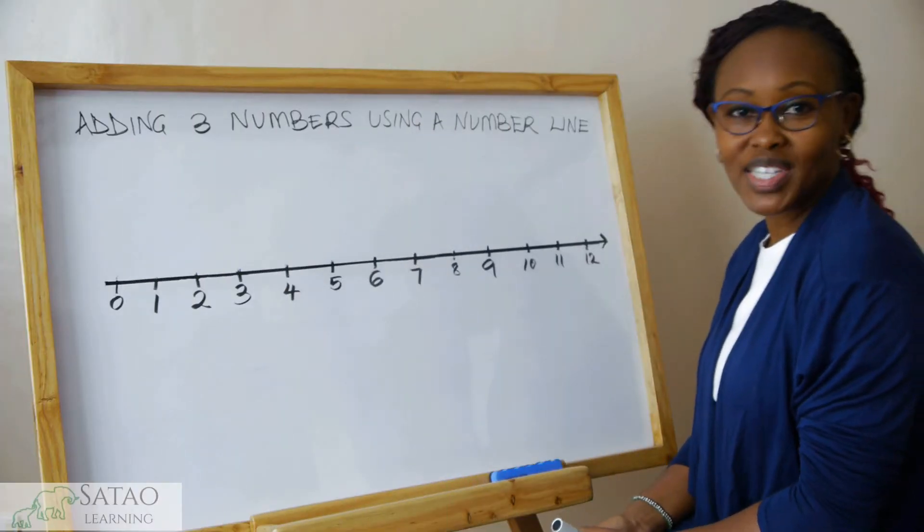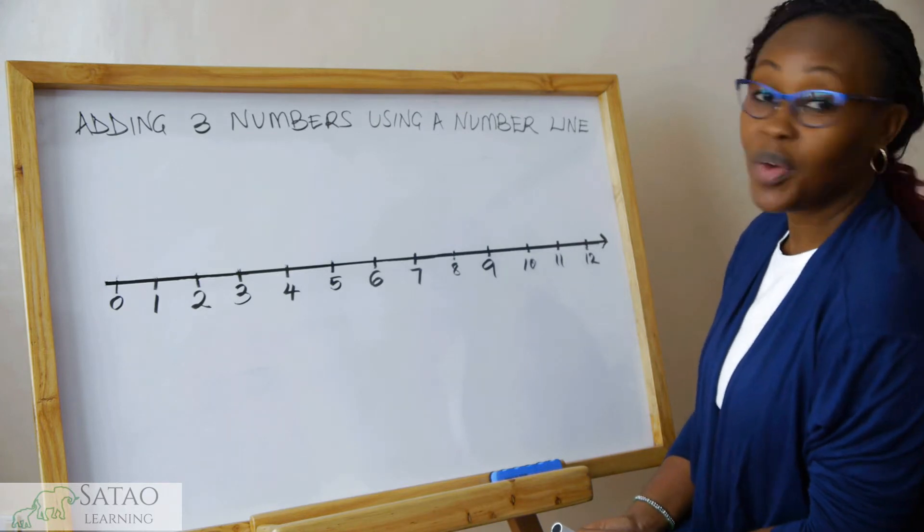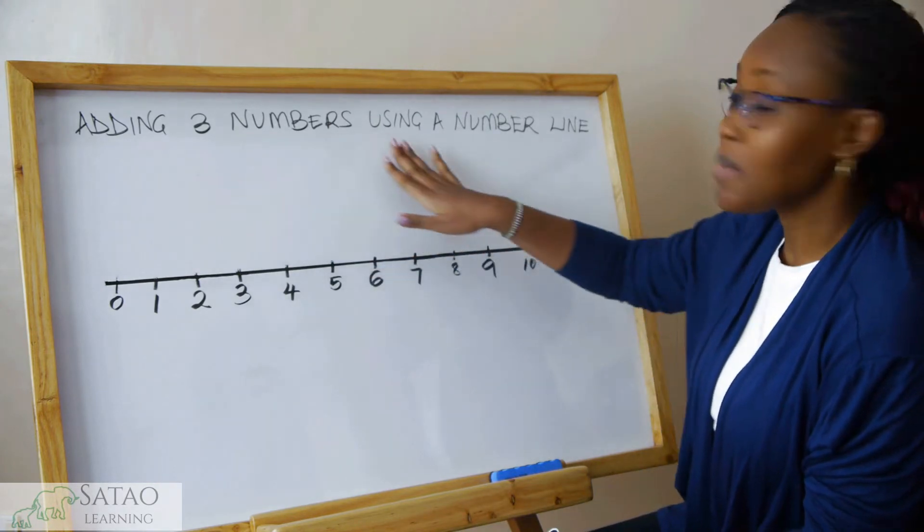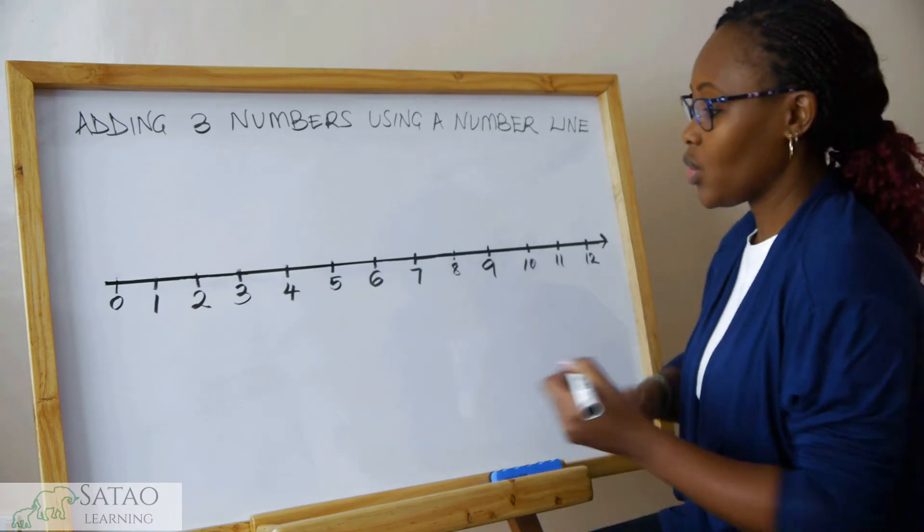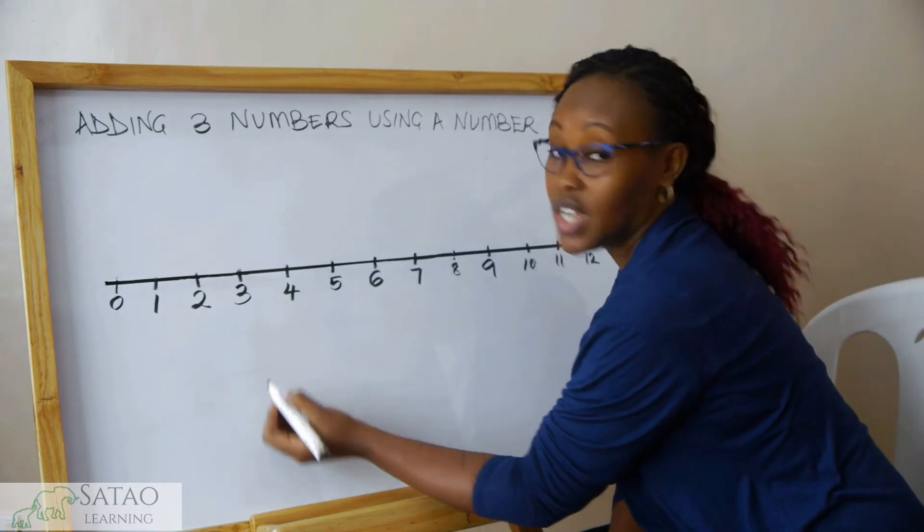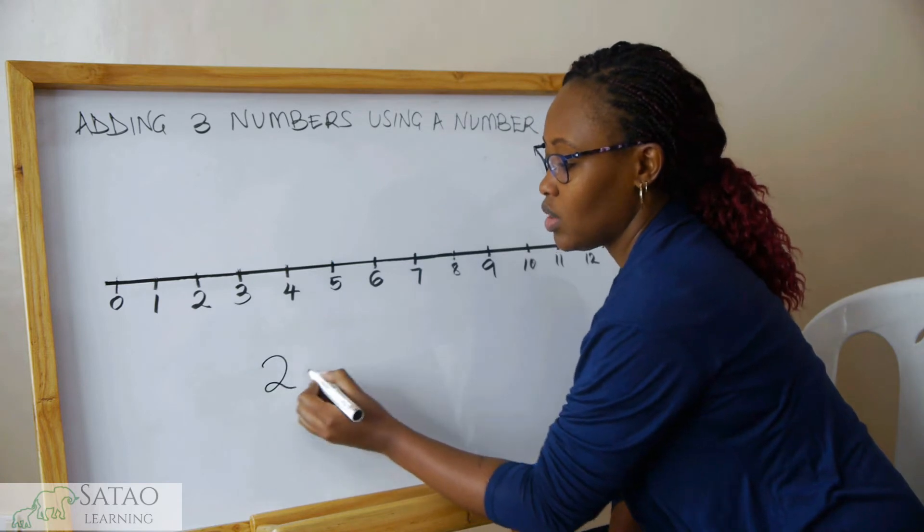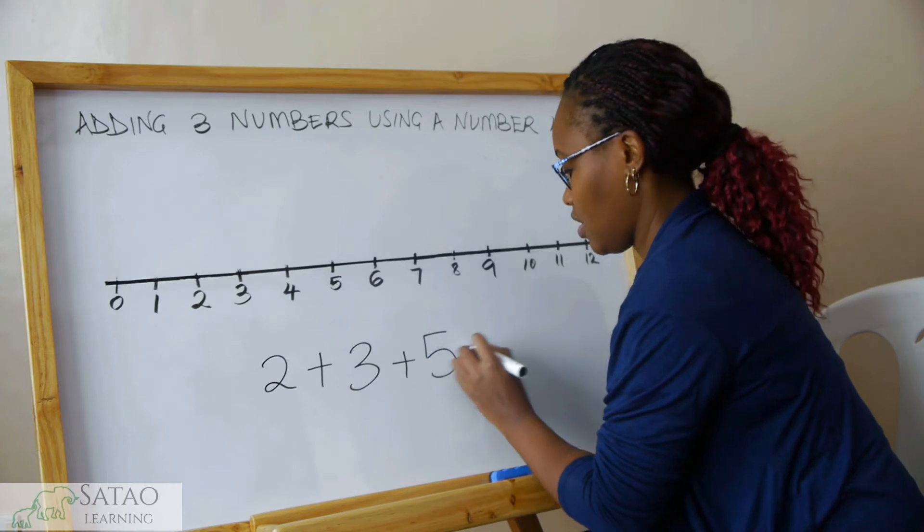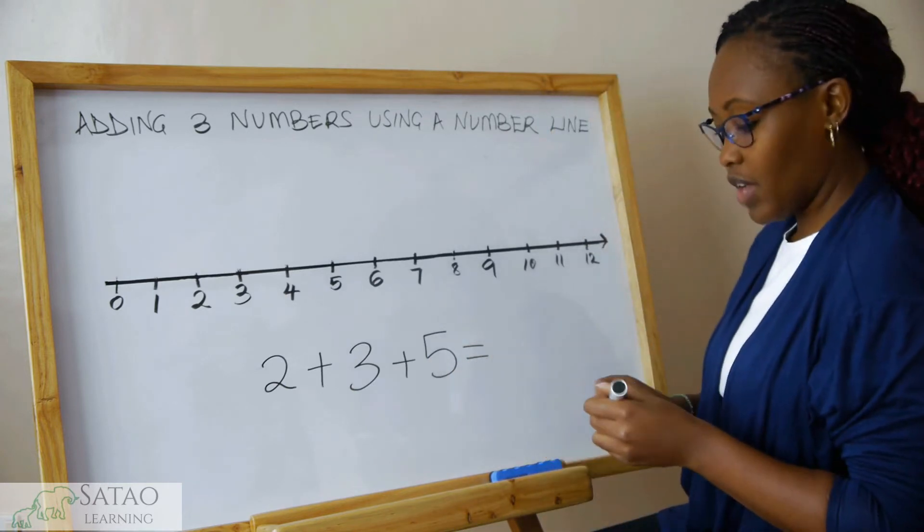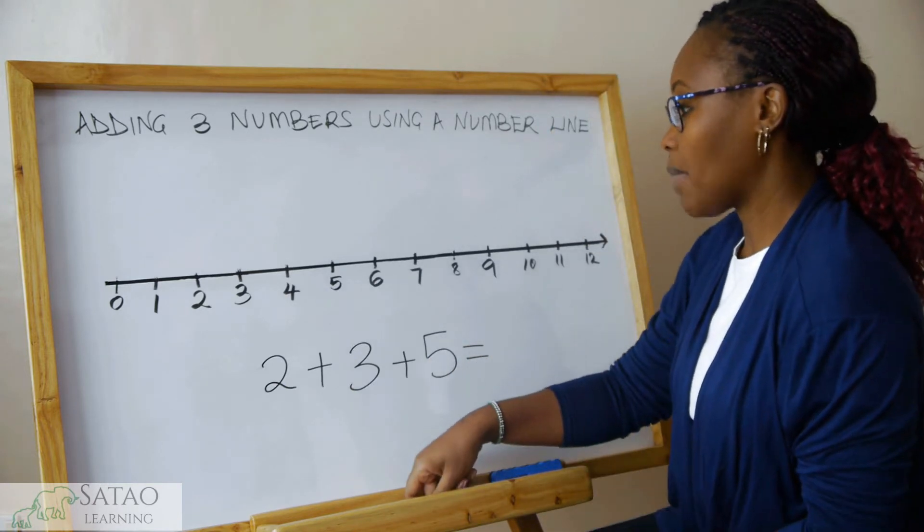Hello boys and girls, and welcome to Satao Learning. Today we are going to be adding three numbers using a number line. Let's say you're given a question to add three numbers: 2 + 3 + 5. Our first step is to draw the number line.